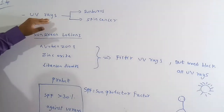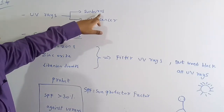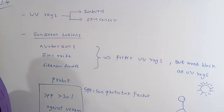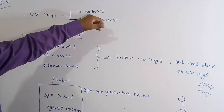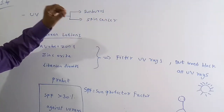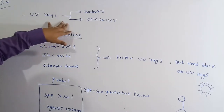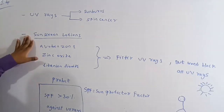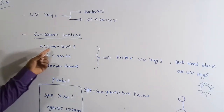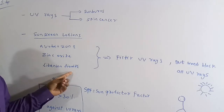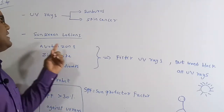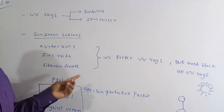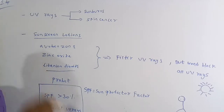The sun emits ultraviolet rays. If you stand in the sun for a long duration, these ultraviolet rays are very harmful for the skin — they can cause sunburns or skin cancer. Sunscreen lotions available in the market have some common components which are oxybenzone, zinc oxide and titanium dioxide.